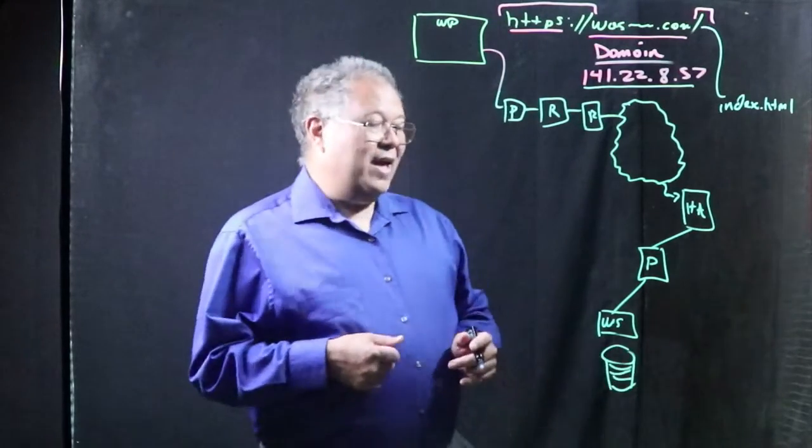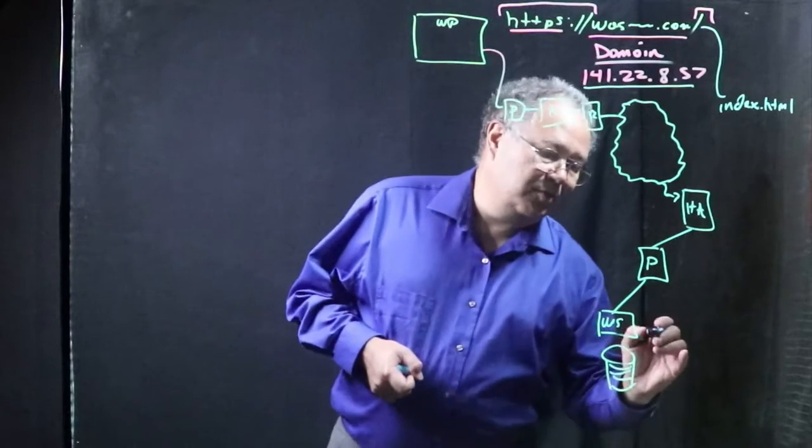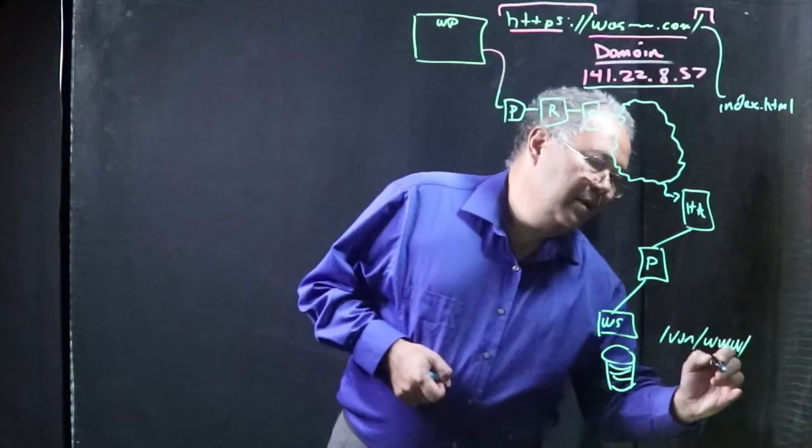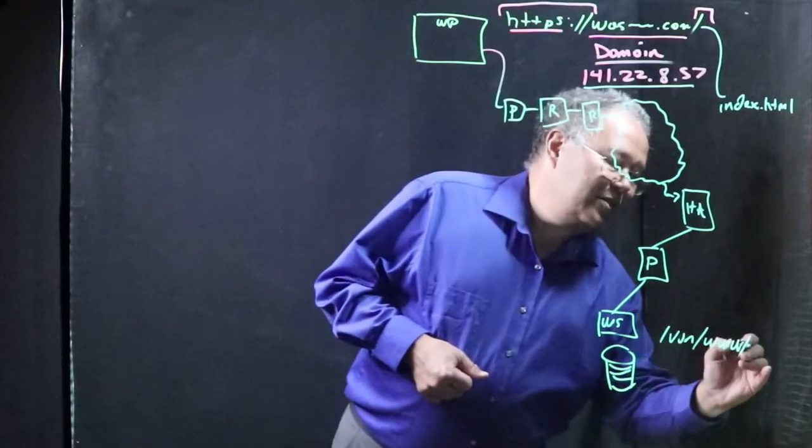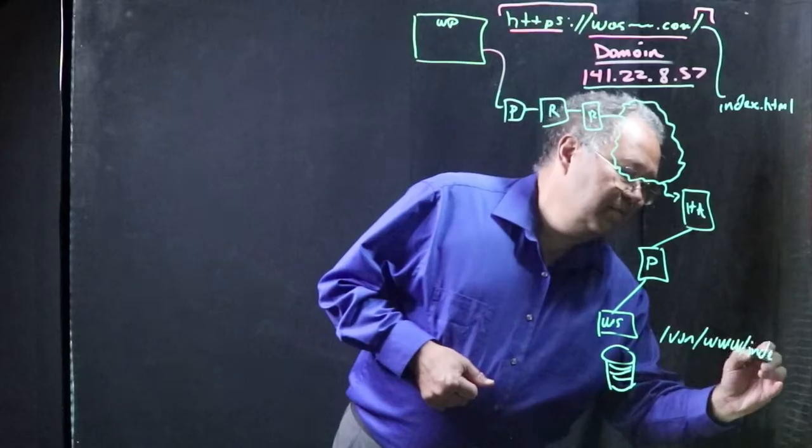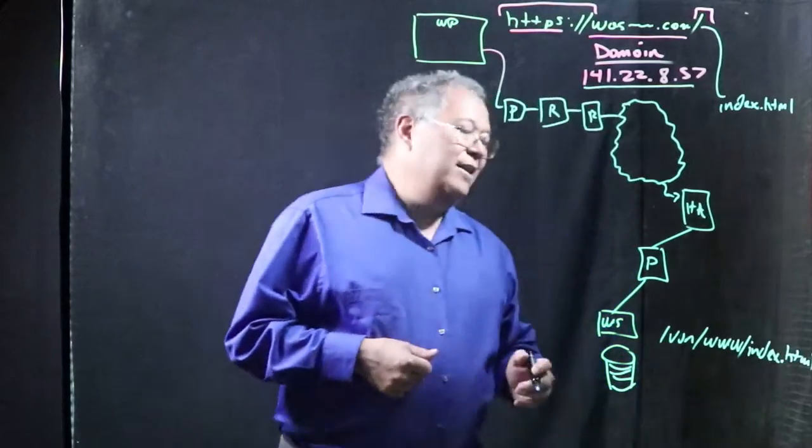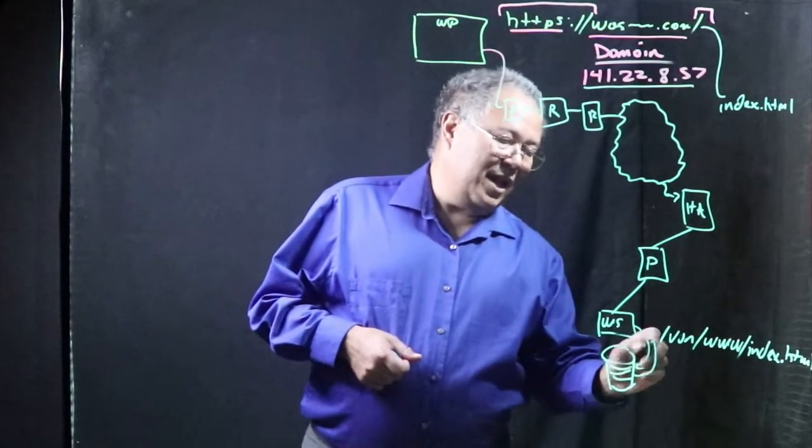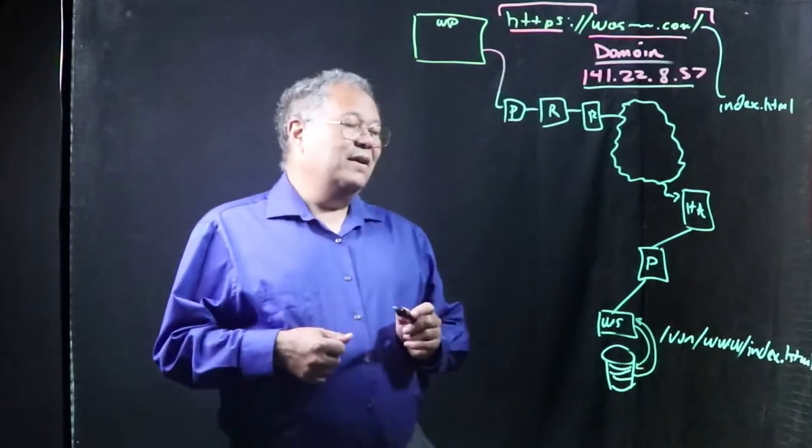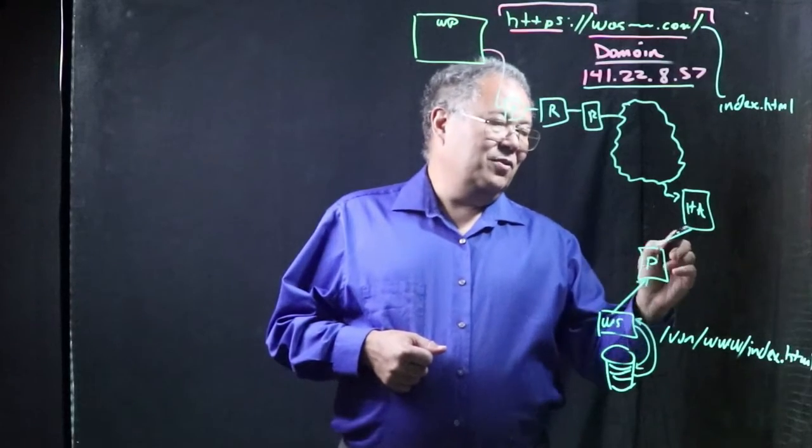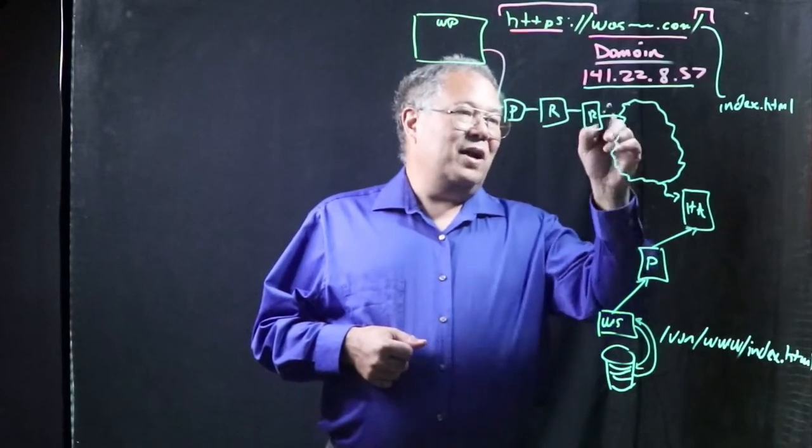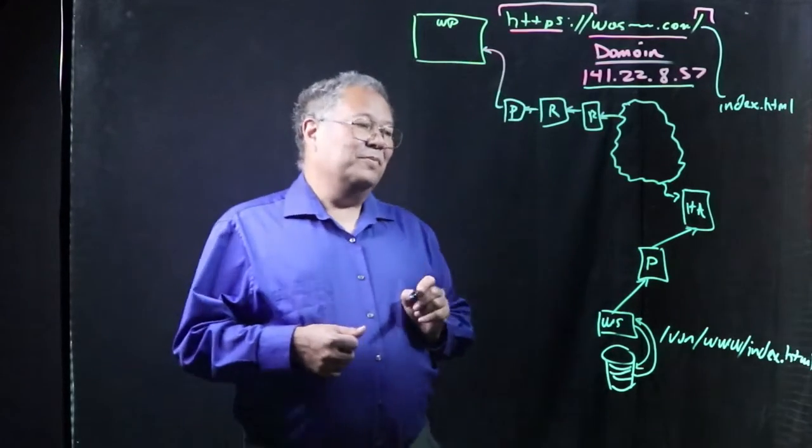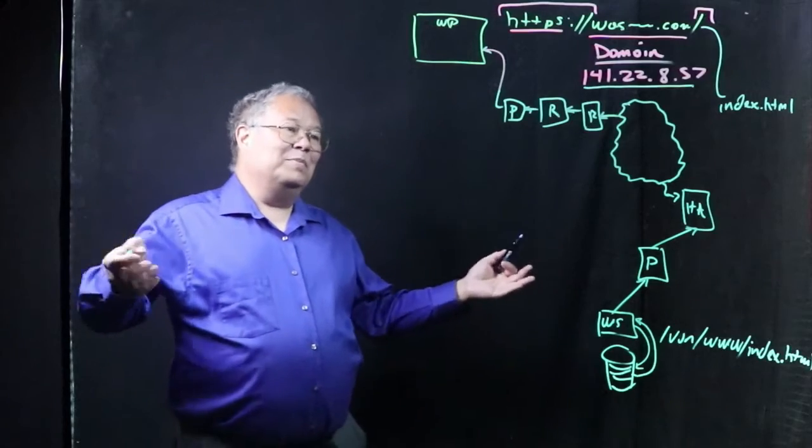The server says, okay, at some location in the file system, like www, do I have a file named index.html? If I do, then I'm going to look in my file system, say yes I have that, send it back. It comes back up through here, back into the frame cloud, out of the frame cloud, through some routers, through some proxies, and back to you. Wow! Simple!